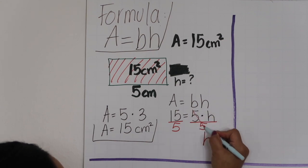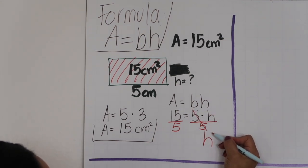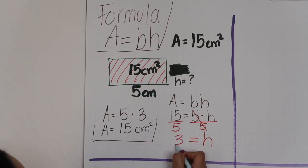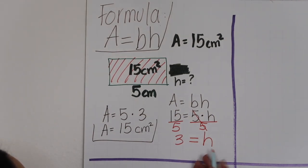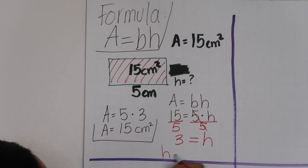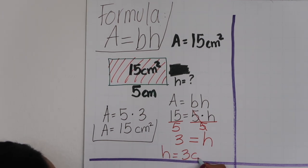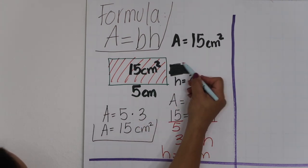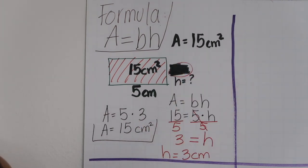5 divided by 5 is 1, so we cancel that out and we say H equals 3. I can rewrite it in this form: H equals 3 centimeters. As you can see, this was 3 before.